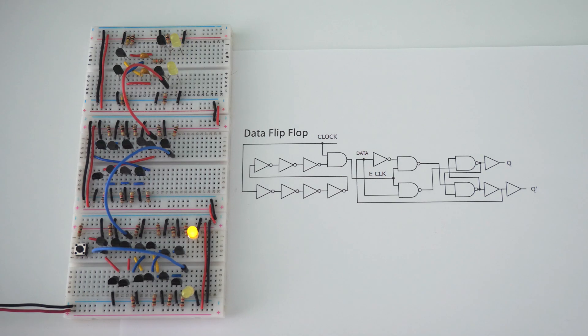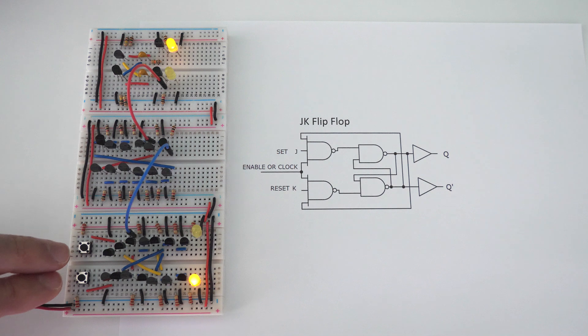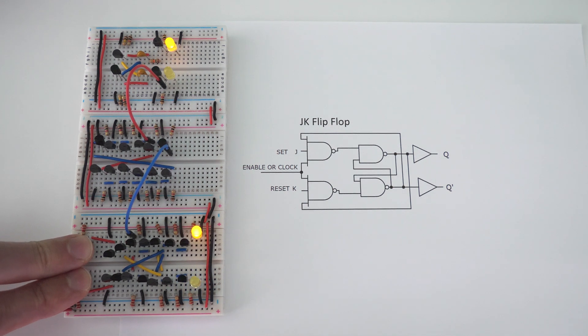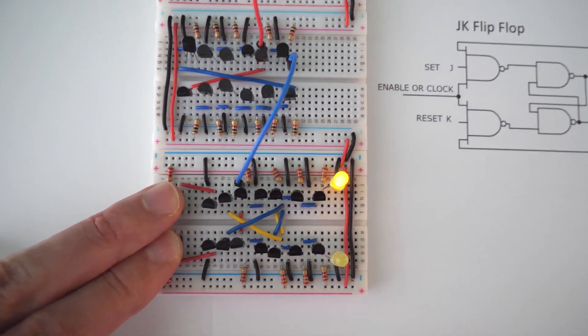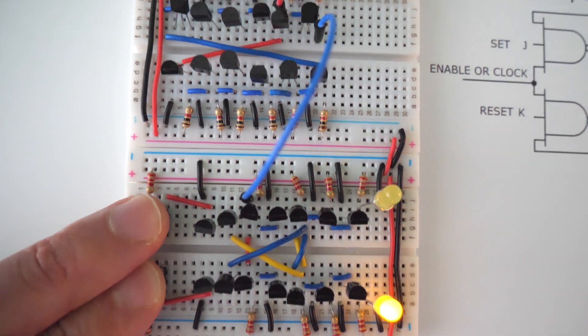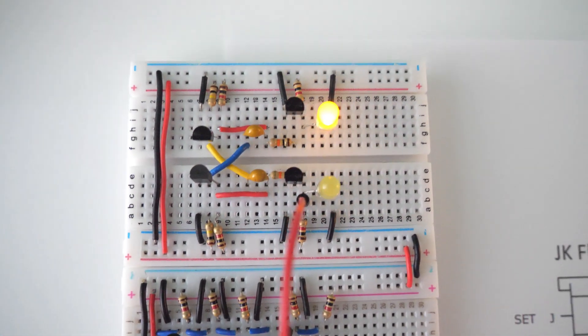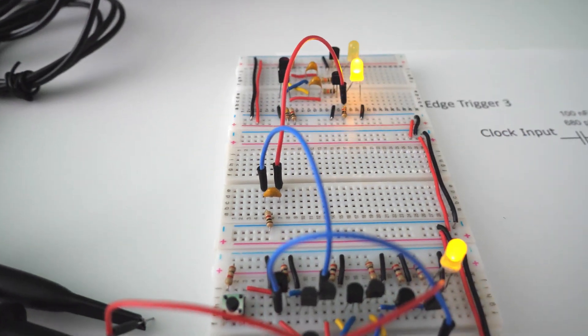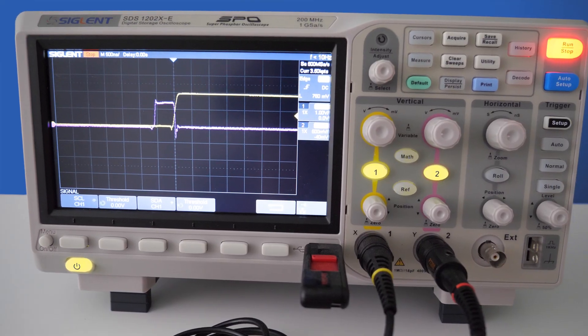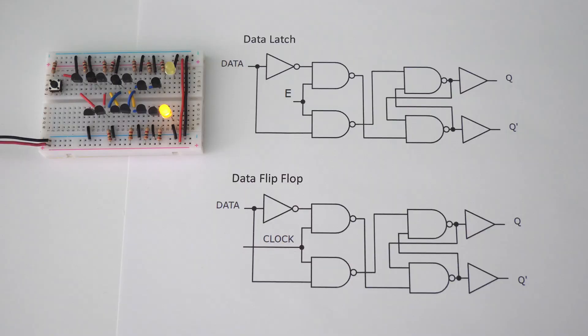Hello, my smart and talented friends, and welcome to the Global Science Network. Today, we're going to be looking at how to build a data flip-flop and a JK flip-flop. These are really important circuits to understand how to build. Right now we are working on building a 4-bit computer using individual transistors, and then we're going to be building artificial neurons as we work our way towards creating non-biological human consciousness.